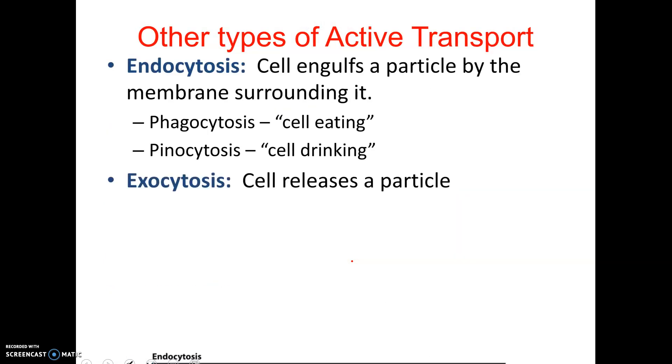The last types of active transport are endocytosis — where the cell actually surrounds and engulfs something — and exocytosis, where it spits something out.